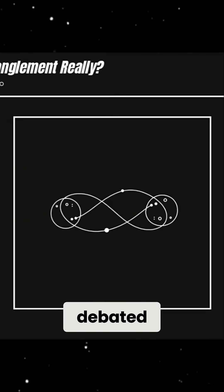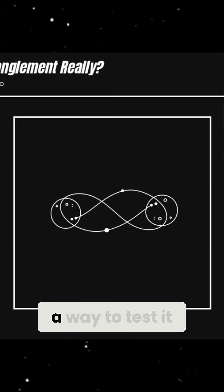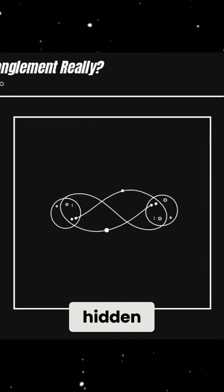For decades, scientists debated whether quantum entanglement was real or just a mathematical trick. But in the 20th century, a physicist named John Bell came up with a way to test it, known as Bell's theorem. His work showed that if quantum mechanics was correct, then entangled particles truly would behave in an instantly correlated way, without any hidden variables.